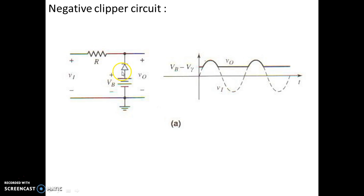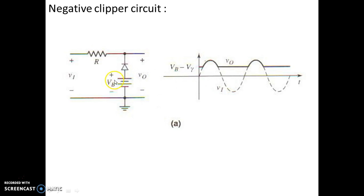The same circuit used for the positive clipper can be used for the negative clipper, but there is a slight difference in the position of the diode — the diode position is altered. During the positive half cycle, the diode is reverse biased when the input waveform is greater than the biasing voltage, so the resistance is very high and we get output across that high resistance. During the negative half cycle, the diode remains forward biased, so current circulates through the input loop and we get no output. The resulting waveform is shown accordingly.